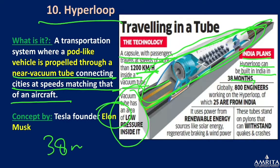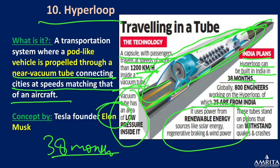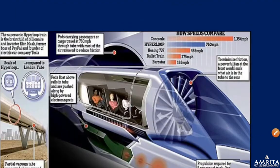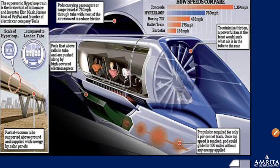Globally, 800 engineers are working on hyperloop, of which 20 are from India. It uses power from renewable energy sources like solar energy, regenerative braking, and wind power. The tube stands on pylons that can withstand earthquakes and crashes, making it seismically safe. It is a brainchild of Elon Musk.